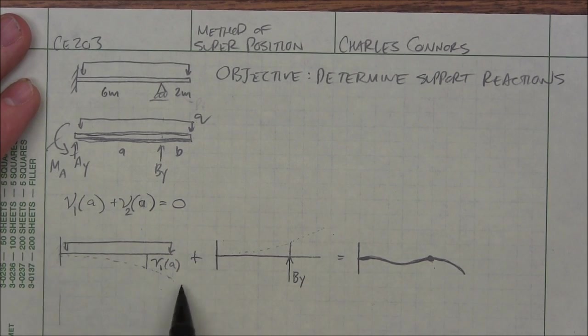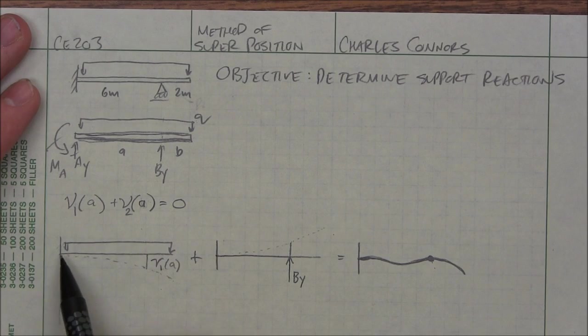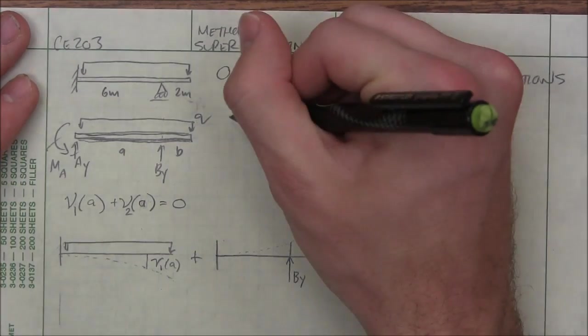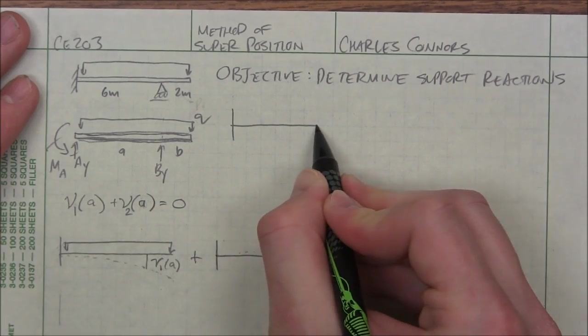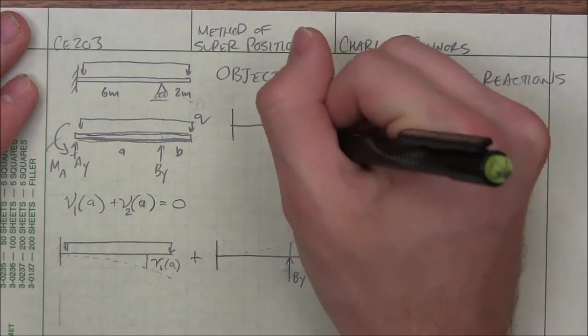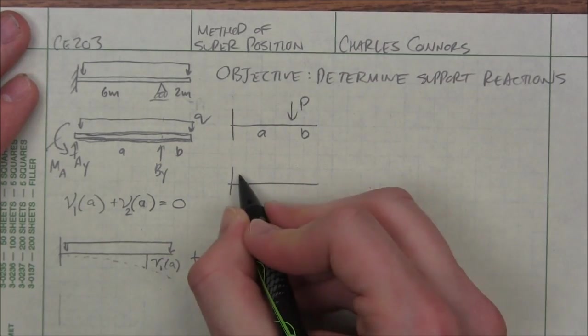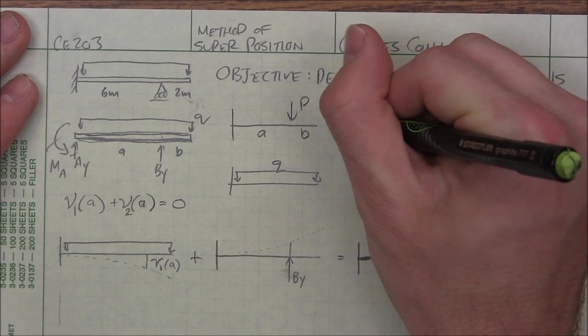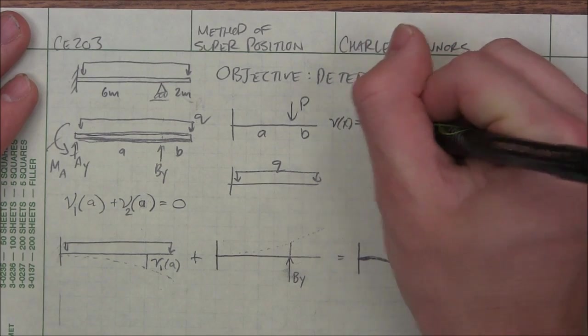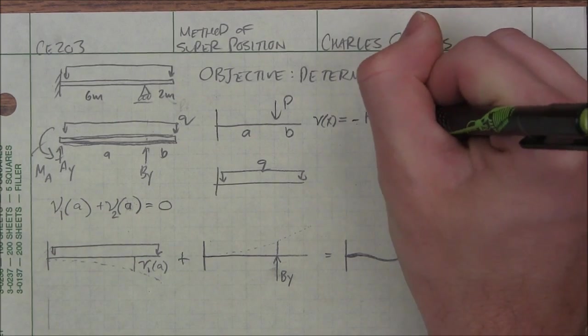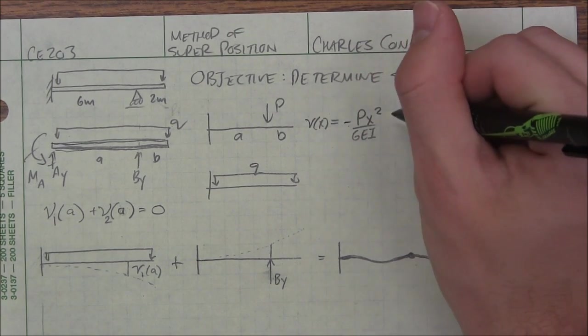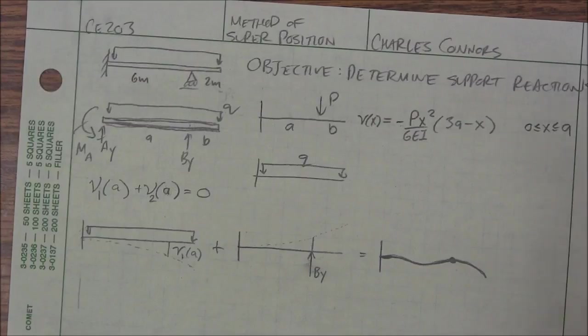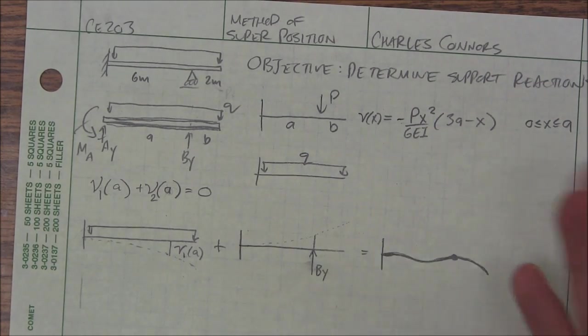We can actually look in the back of the book for the deflections at certain points, at any point X, on both of these beams. These are both situations that are found in the book. So I'll just copy down what the book says. It has a P, A, B, and Q. So this is V of X equals negative P X squared divided by 6EI, 3A minus X. And that applies from 0 to A, but since we're doing it at A, that's totally fine. We're cool.